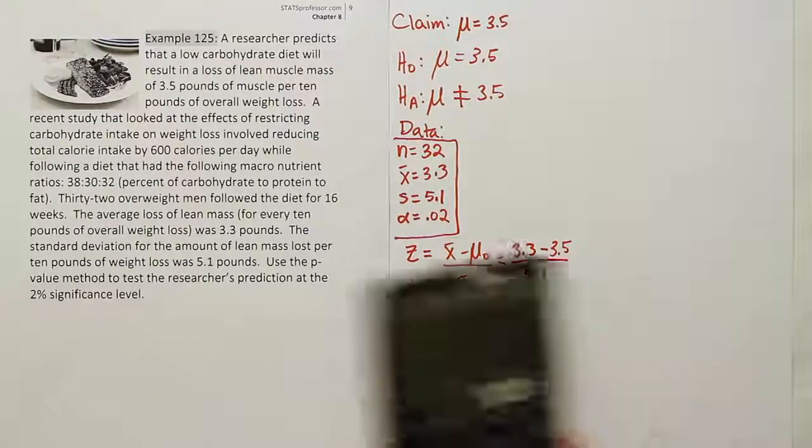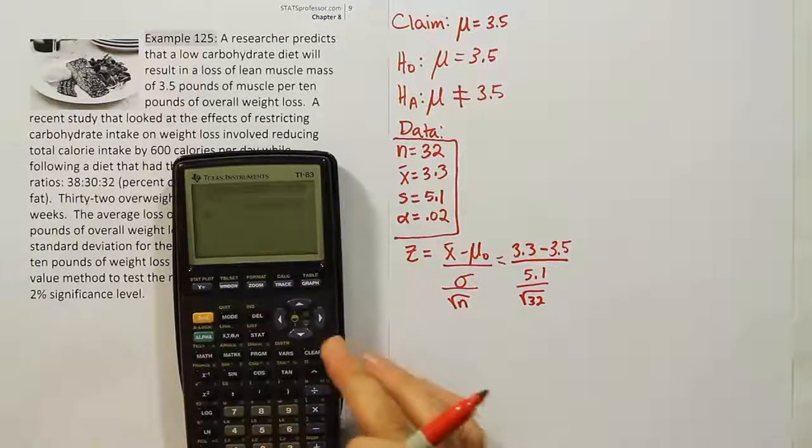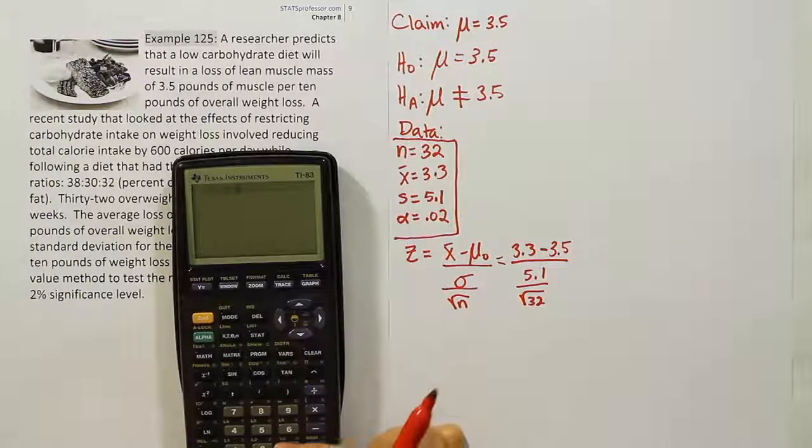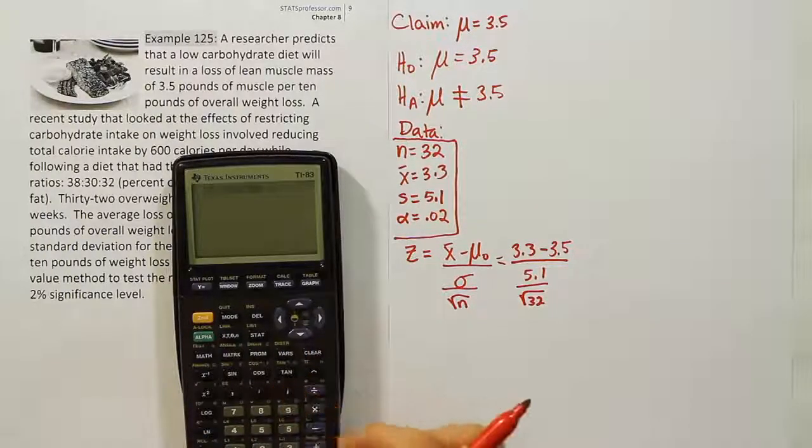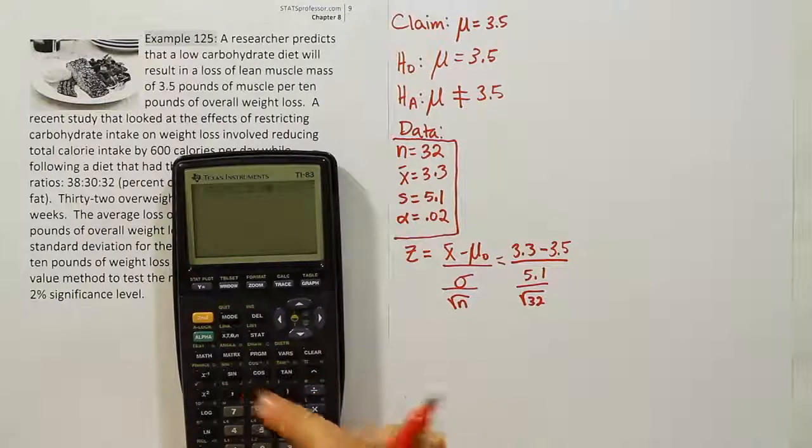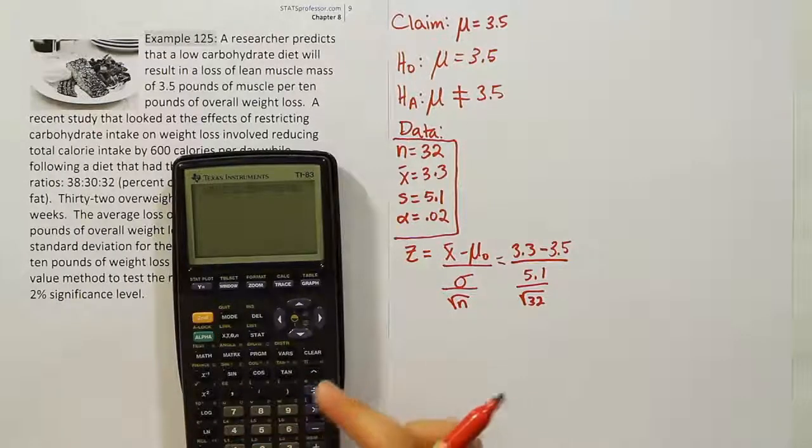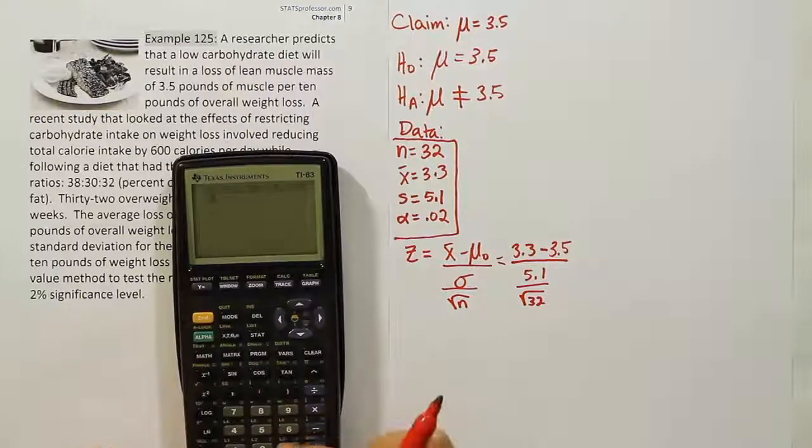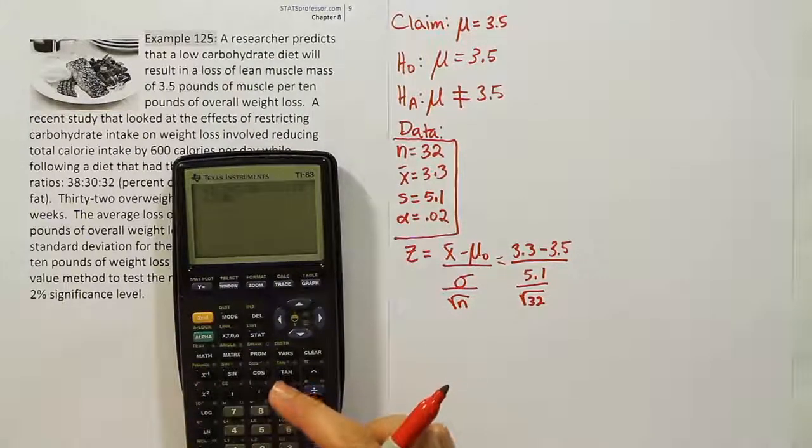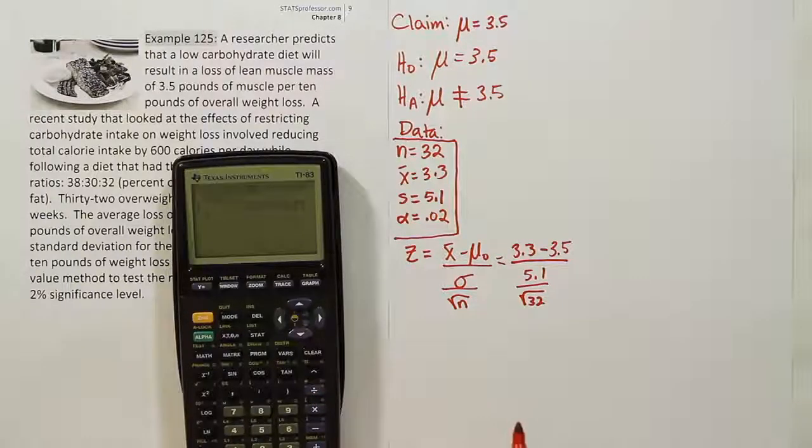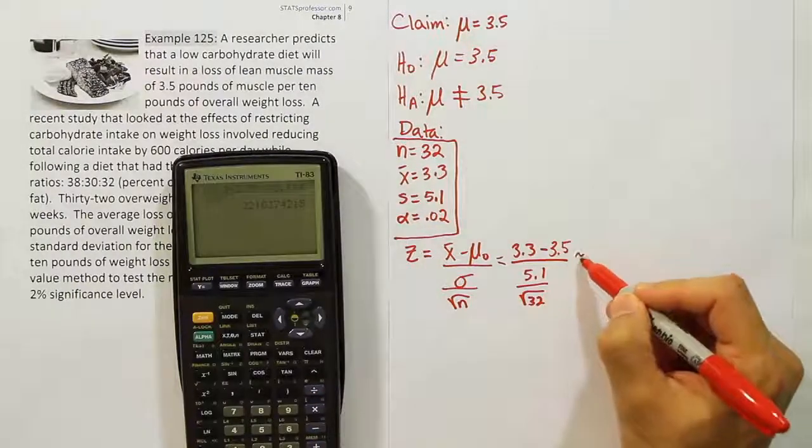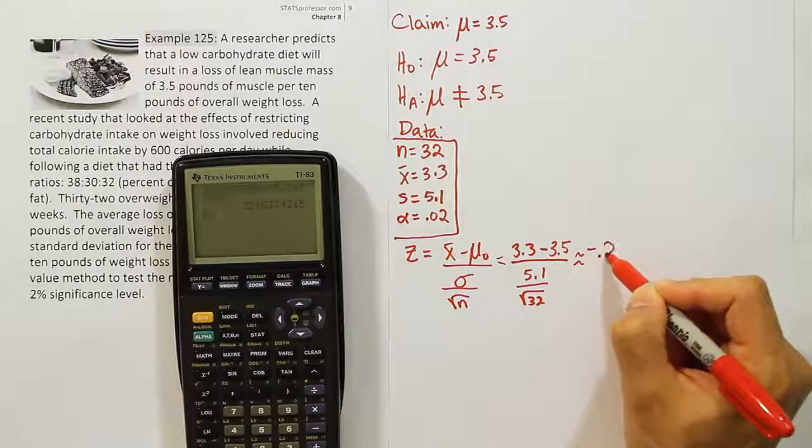Let's see what that gives us in our calculator. We'll have (3.3 - 3.5) divided by (5.1 / √32). Close the parentheses and hit enter, and we get approximately -0.22.